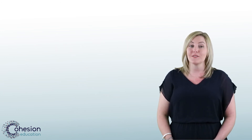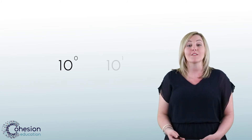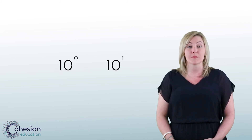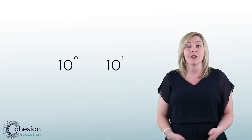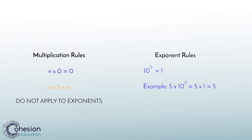Another common confusion students can have is with the exponents 10 to the 0 power and the first power of 10. Students are generally stronger with the larger exponents such as the second power of 10 or the third power of 10. Students relate 0 and 1 to the multiplication rules they have learned early on: any number multiplied by 0 is 0, and any number multiplied by 1 is the number itself. It is important to reinforce the difference between regular multiplication and the powers that exponents represent.